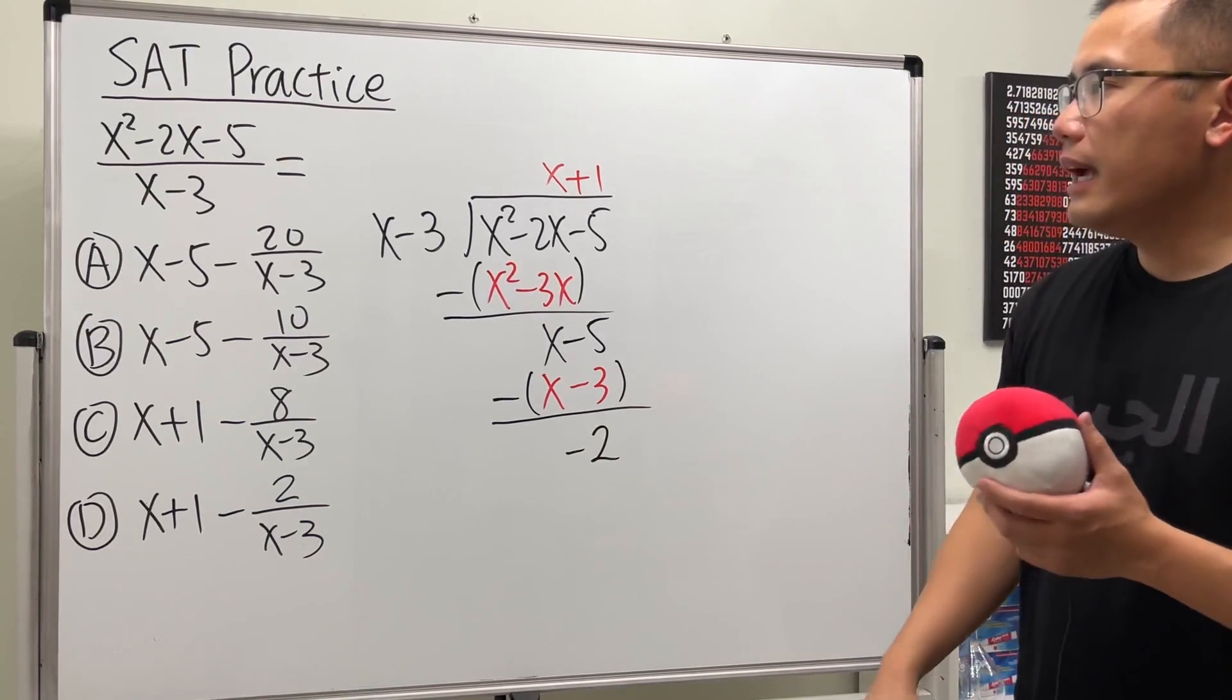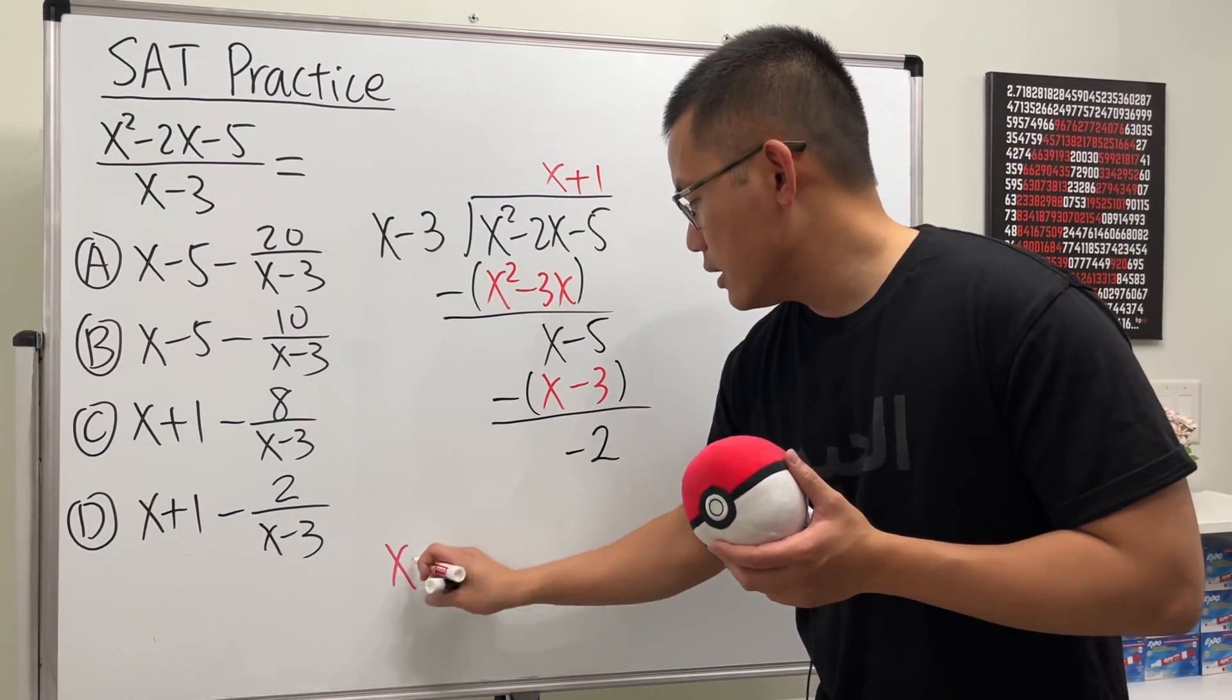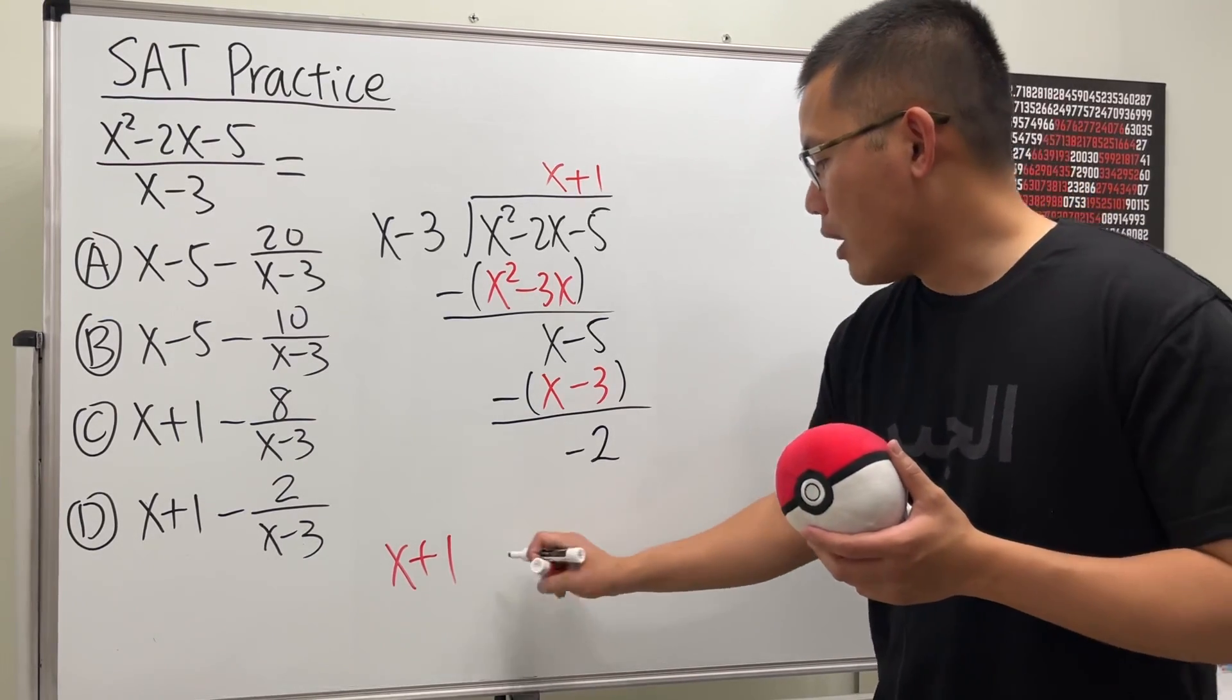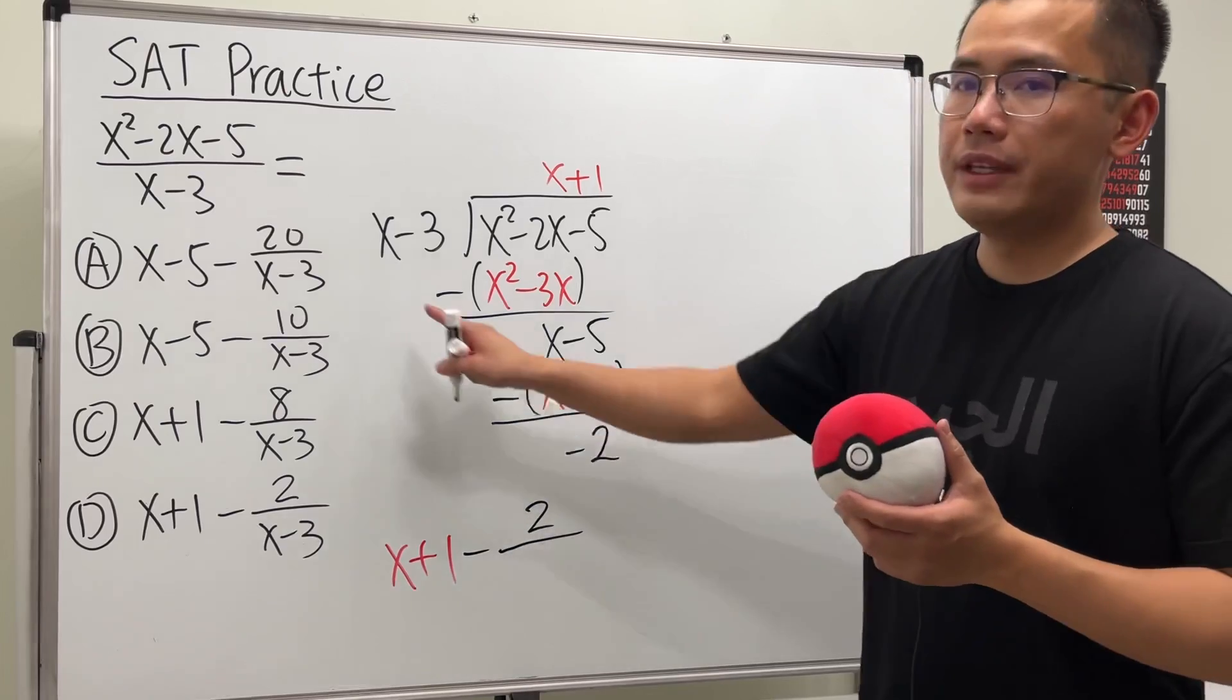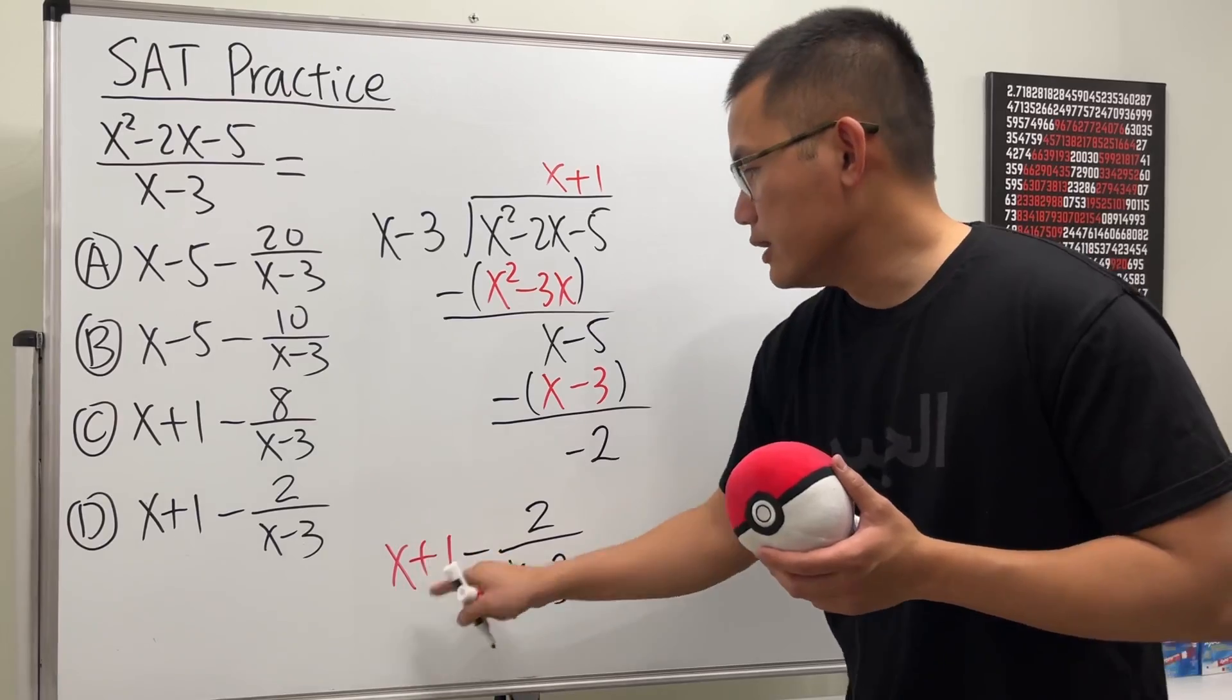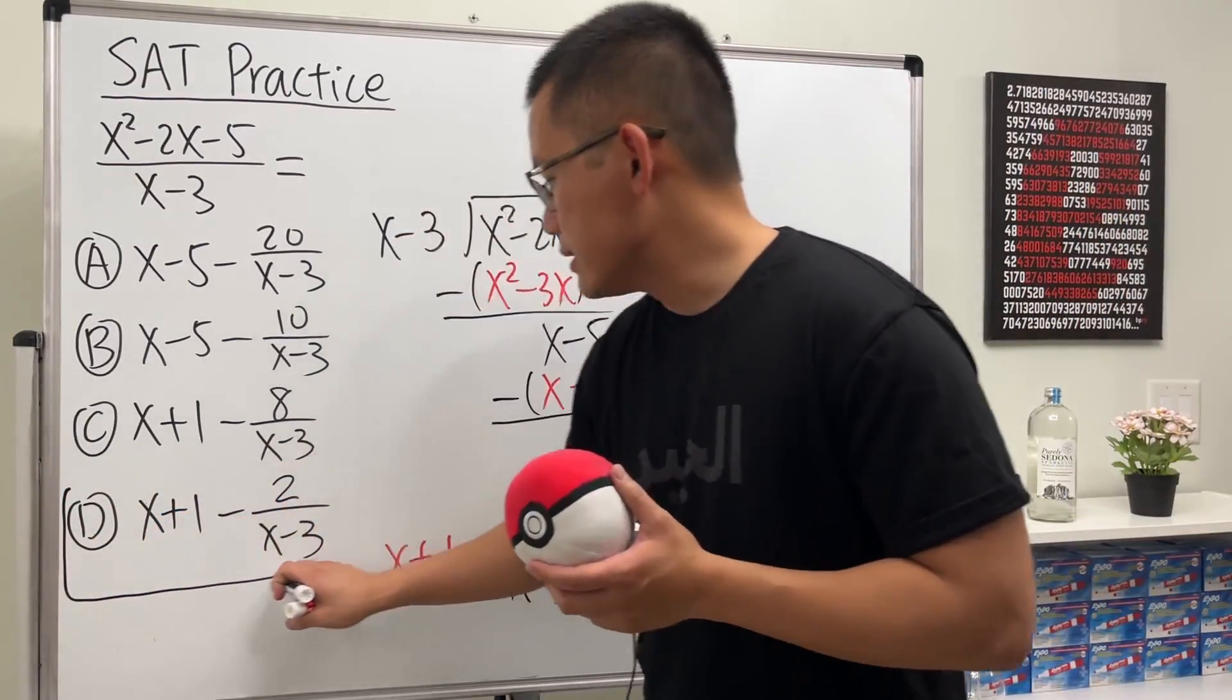All right? And lastly, we just have to make sure we write down our answer correctly. This is the part that has no fraction, just x plus 1. And then this is the remainder part, which is a minus 2. And then we will have to divide it by the original denominator, which is the x minus 3. So this right here is the answer, and that is going to be choice D.